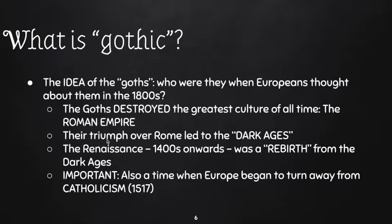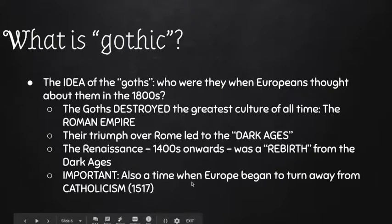After the fall of Rome, it led to what later got called the Dark Ages and then the medieval period. In the 1400s in Europe, we had the Renaissance, which means rebirth from the Dark Ages. That's also around the time when Europe began to turn away from Catholicism, which we're going to get to today.